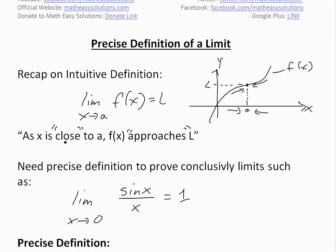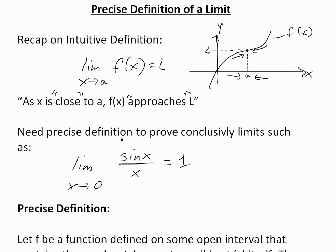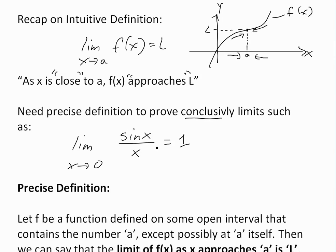This intuitive definition is subjective, because you're using words like 'close to' and 'approaches.' So we need a more precise definition to prove conclusively limits such as the limit as x approaches 0 of sine x over x. We can't plug in 0, so we need something more conclusive than plugging in numbers getting closer and closer to 0.